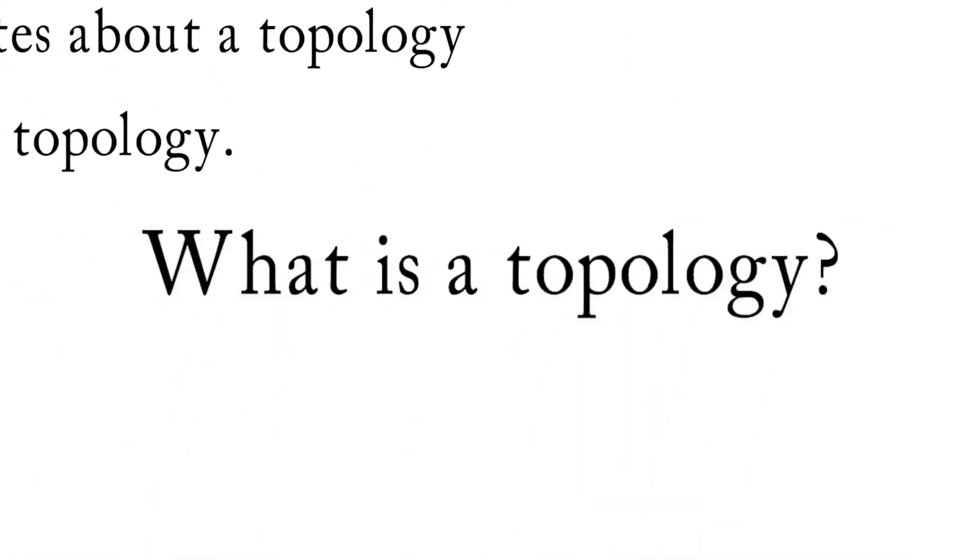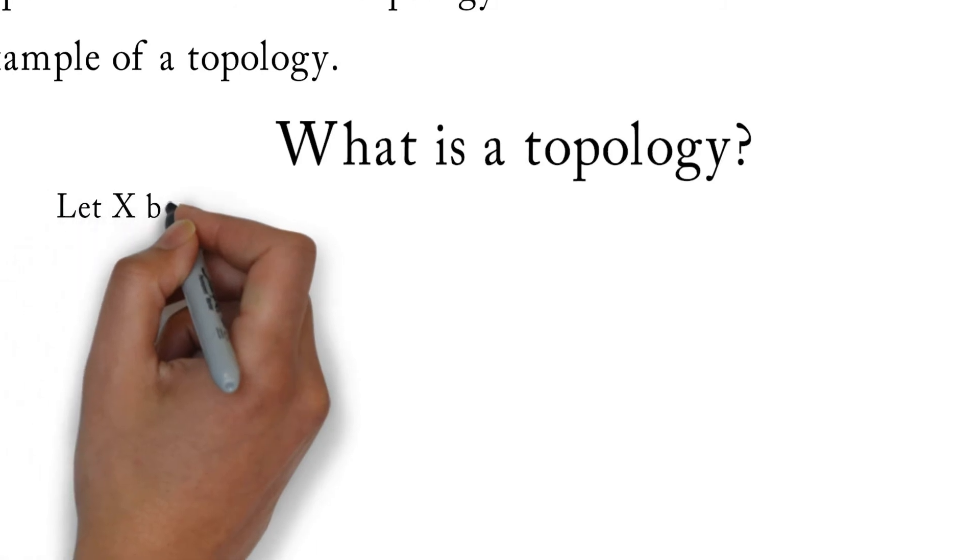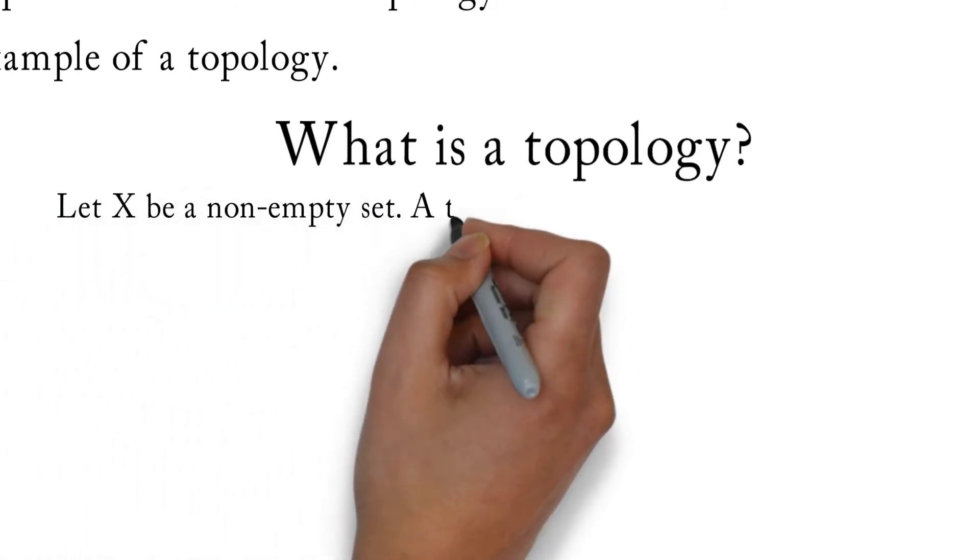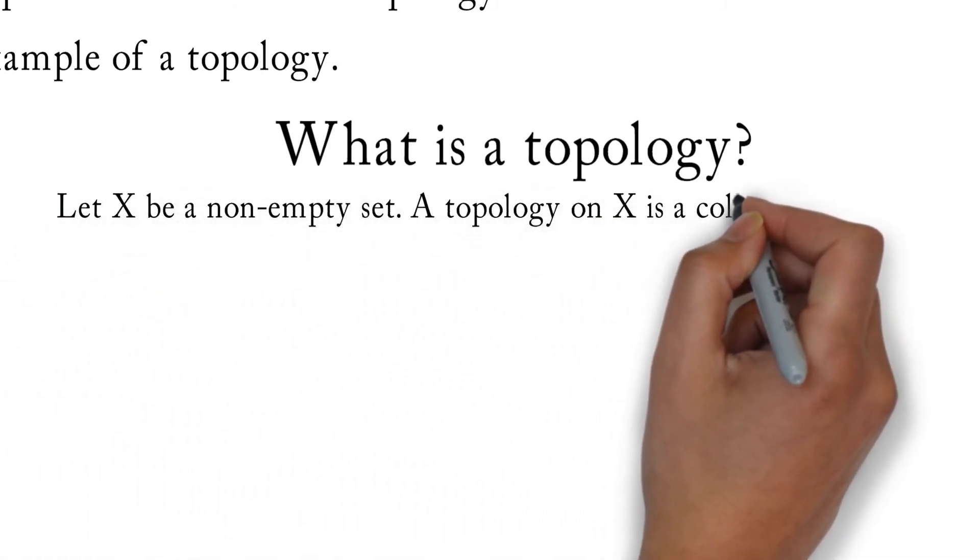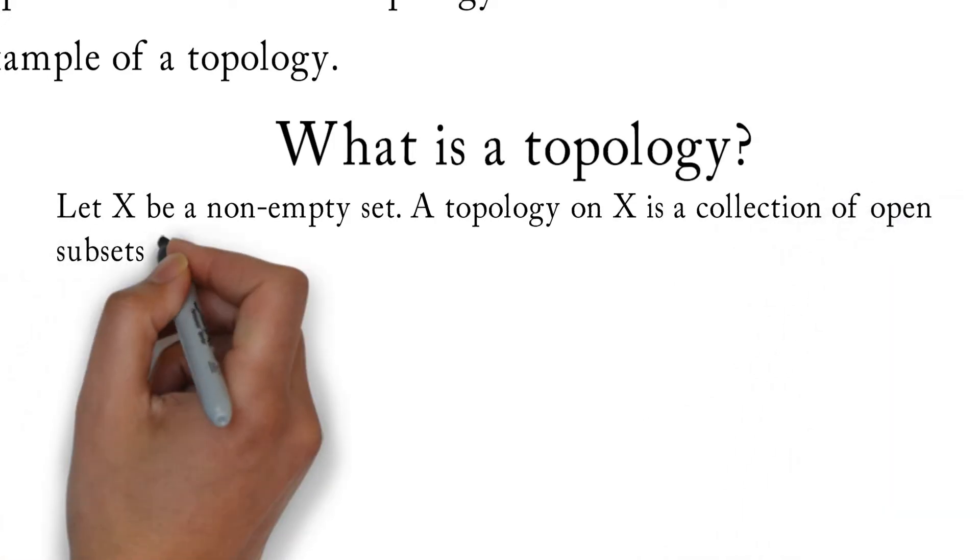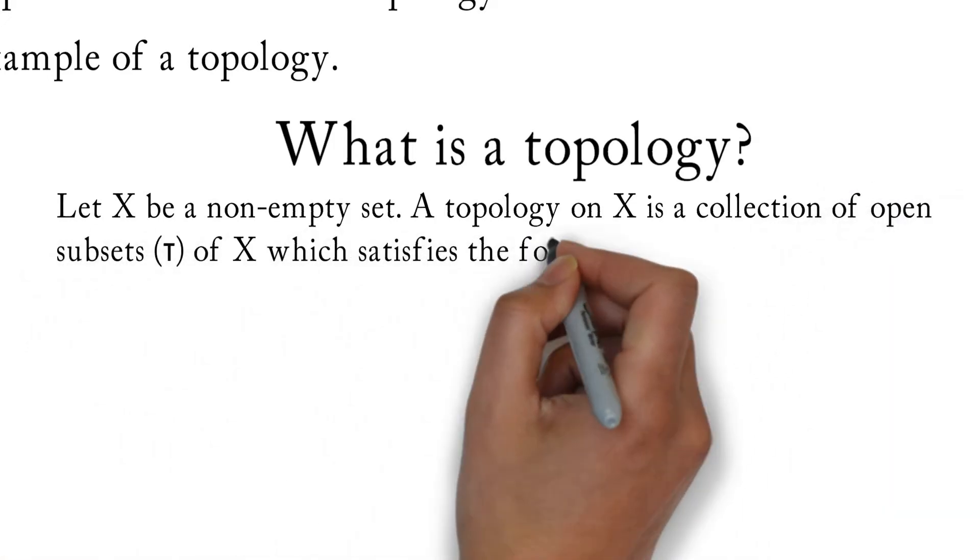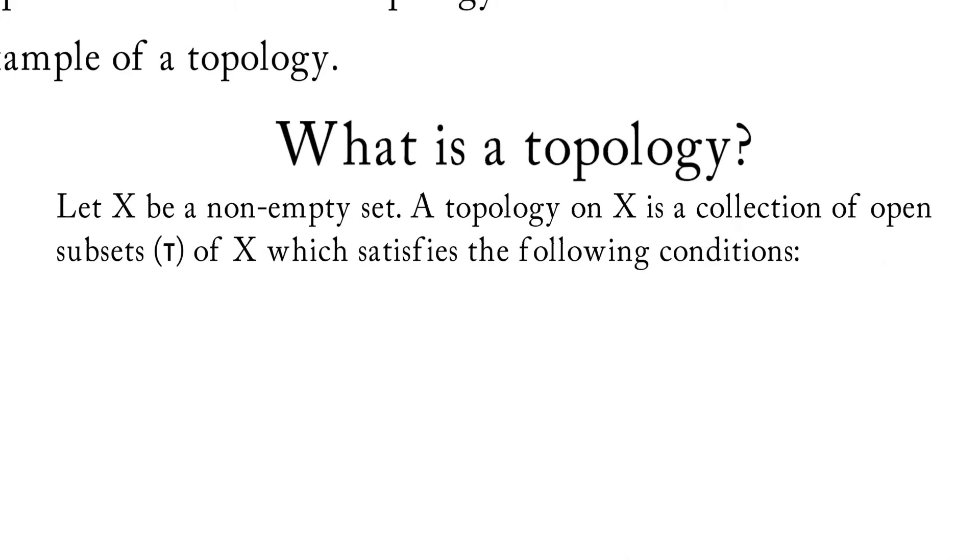So what is a topology? Let X be a non-empty set. A topology on X is a collection of open subsets tau of X which satisfies the following conditions.